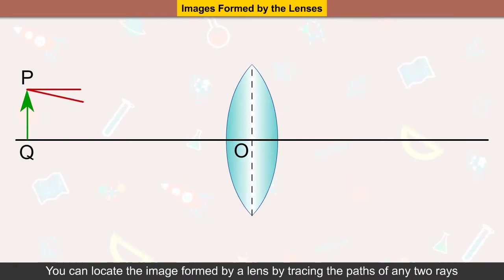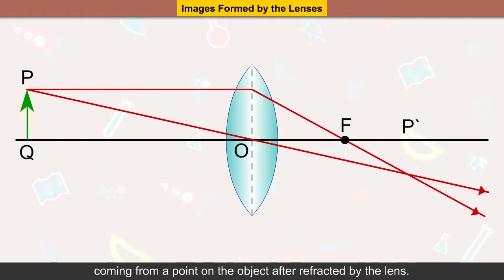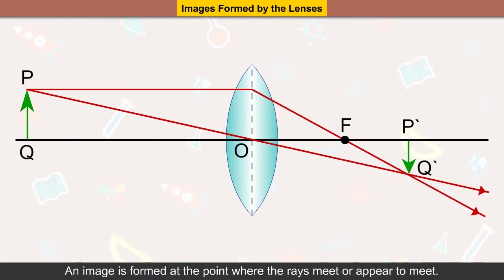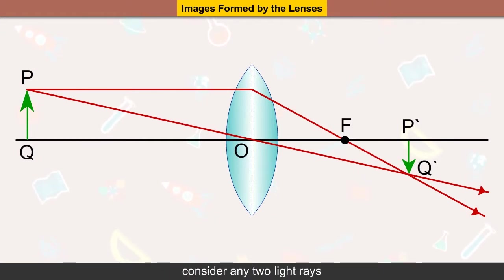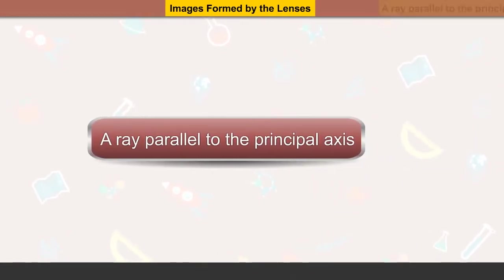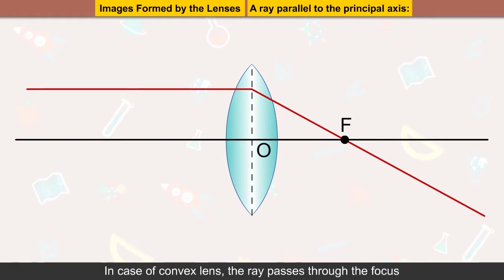Images formed by lenses: you can locate the image formed by a lens by tracing the paths of any two rays coming from a point on the object after being refracted by the lens. An image is formed at the point where the rays meet or appear to meet. Consider any two light rays: a ray parallel to the principal axis — in the case of a convex lens, the ray passes through the focus after refraction.